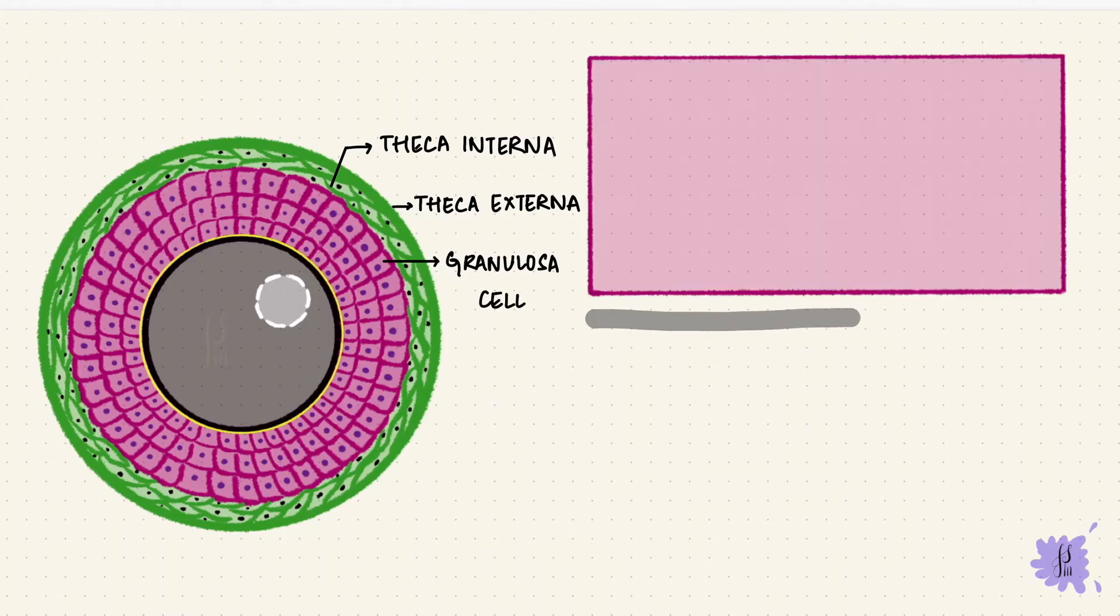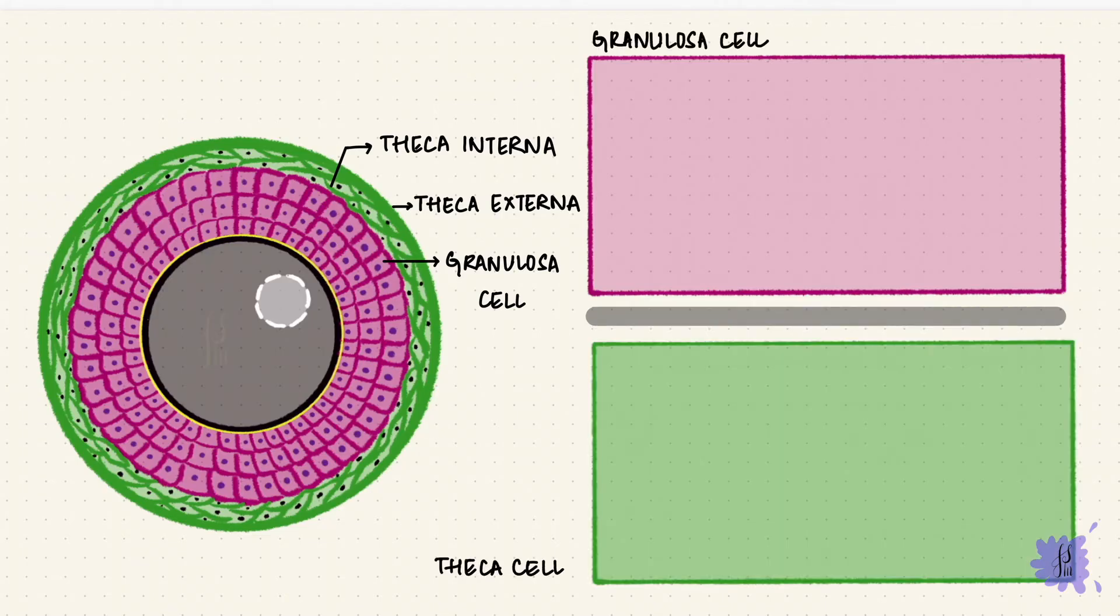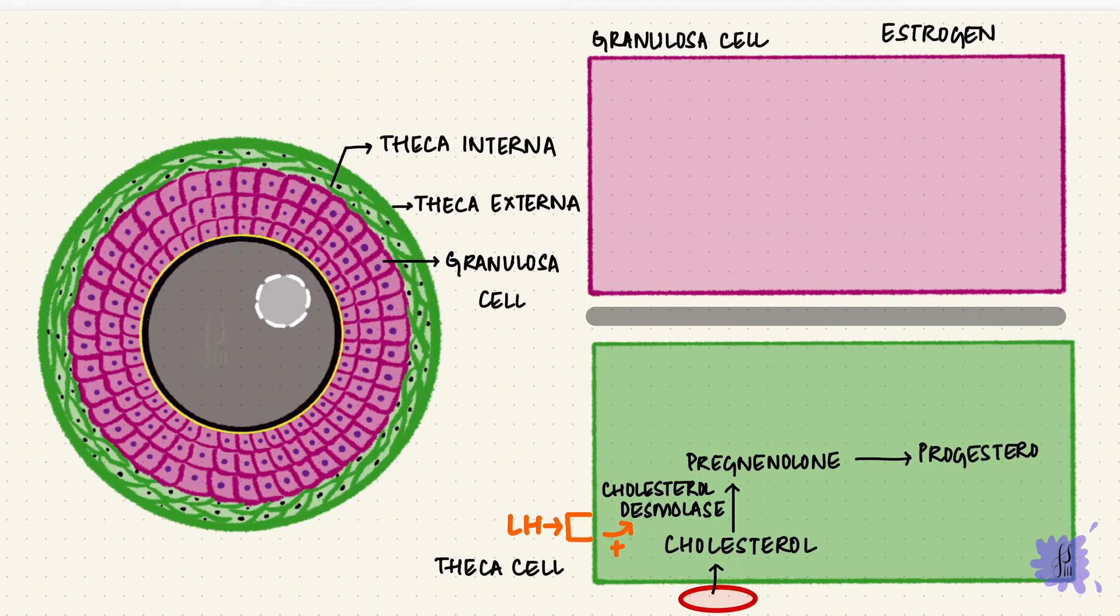The granulosa cells sit on a basement membrane, so that's what separates them from the theca cells. And together, these cells form estrogen. So let's see how that happens. The theca cells are near capillaries, and they have receptors for the luteinizing hormone. They take up cholesterol from the capillaries, and luteinizing hormone stimulates cholesterol desmolase. That's the first enzyme that converts cholesterol to pregnenolone. That then forms progesterone, and they ultimately form androgens. For androgens to be converted to estrogen, they need aromatase. This enzyme isn't in the theca cells, but it is in the granulosa cells. So the androgens diffuse into the granulosa cells, and get converted to estrogen. This enzyme is stimulated by FSH.